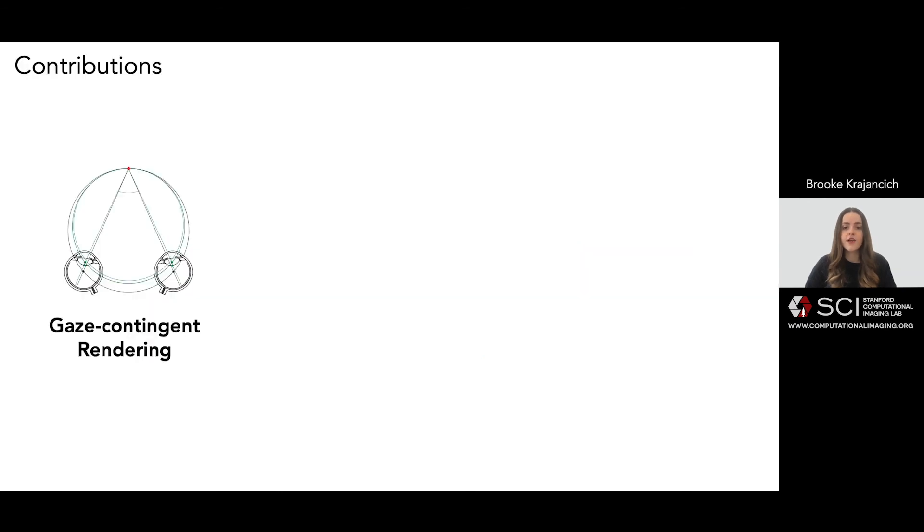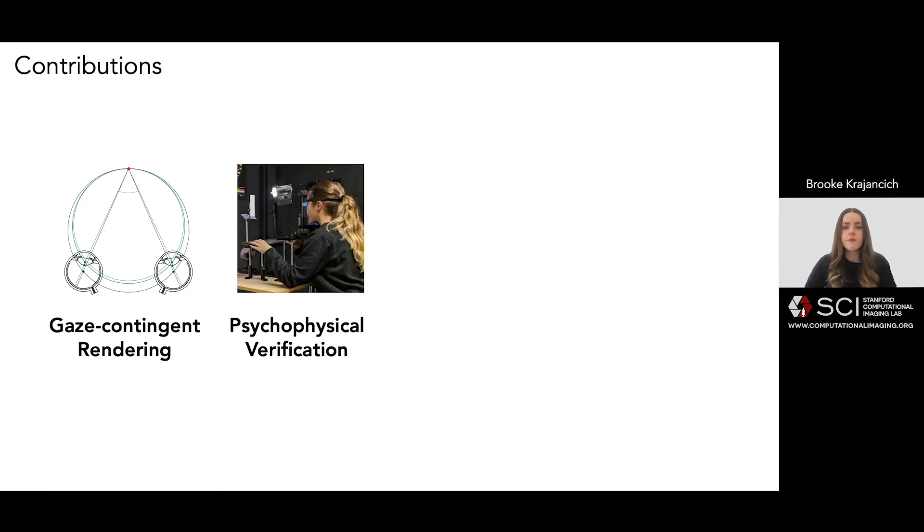Firstly, I'll explain why stereo rendering should in fact be gaze contingent, to more accurately emulate how disparity behaves when we look at real objects. Then I will describe a psychophysical experiment we did to measure a relevant parameter for this rendering approach.